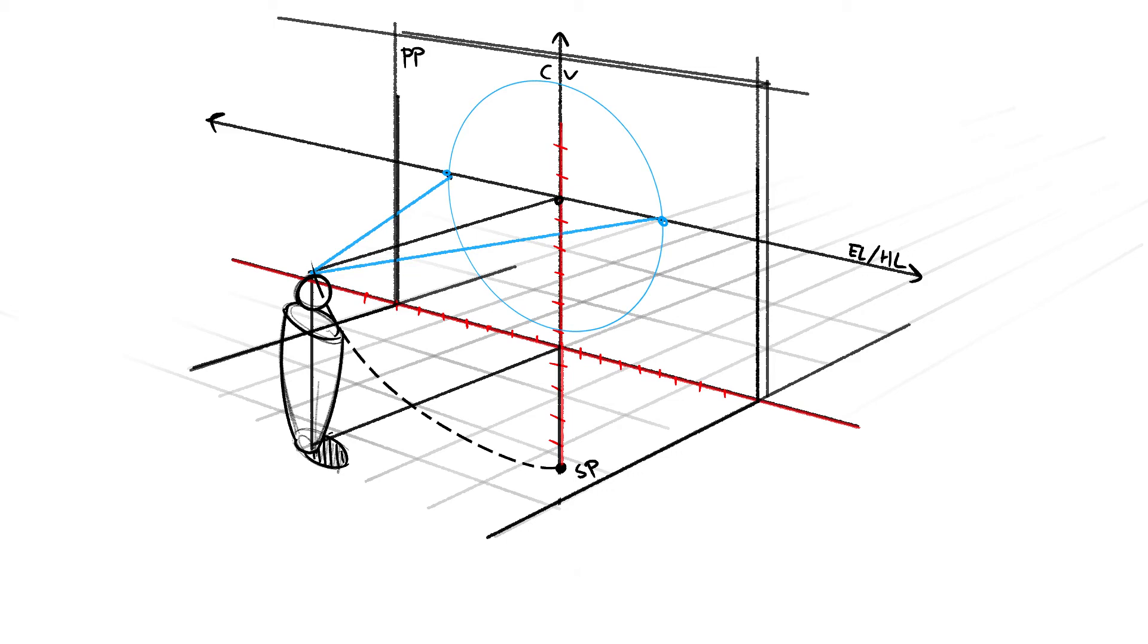We've got the eye level going on forever left and right at the height of the viewer's eyes. On the center of vision line, we've got a true height line telling us both the distance from the station point and the distance from the ground plane to the eye level. And along the point at which the picture plane intersects with the ground plane, we've got a ground measuring line using the same increments as the height line, which we can use to establish scale at the point of the picture plane, and then reference objects further back from those measurements.